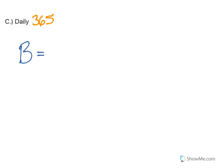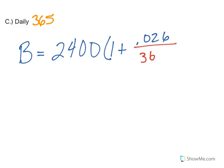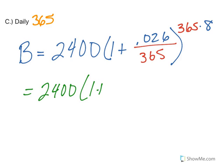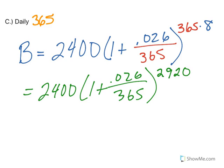Balance—we're still starting with 2,400, 1 plus .026 divided by 365, raised to the 365 times 8 power. Just like I did with the other ones, I'm going to multiply those two together first before I plug it into my calculator. 365 times 8 is 2,920.